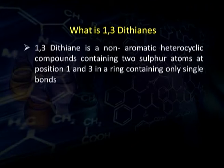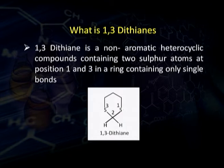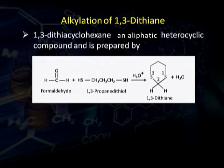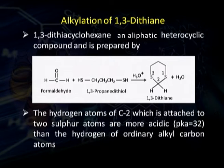What is a dithiane? 1,3-Dithiane is a non-aromatic heterocyclic compound containing 2 sulfur atoms at positions 1 and 3 in a ring containing only single bonds. The name is made up of: di meaning 2, thi meaning sulfur, and ane meaning a ring containing single bonds. This alicyclic heterocyclic compound is prepared by treating formaldehyde with 1,3-propanedithiol in the presence of a trace of acid to give 1,3-dithiane.